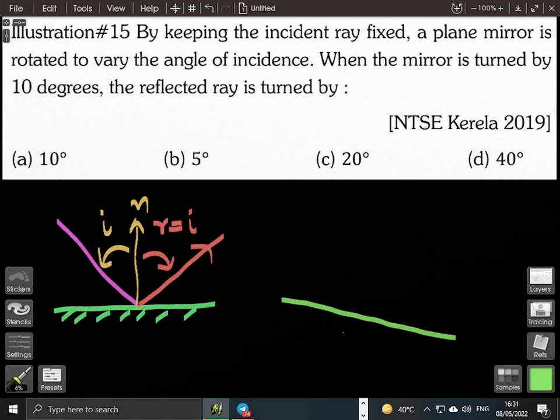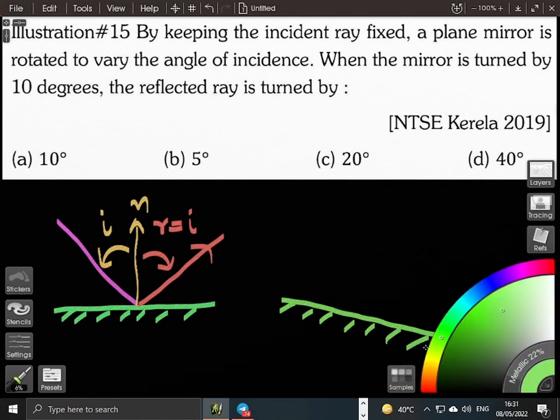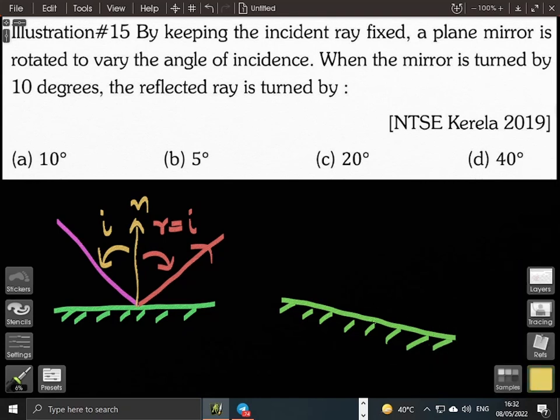So suppose we tilt this mirror by an angle theta. Now the normal looks like this. The new normal is theta degrees. Suppose the old normal was this, so the new normal is rotated by an angle theta.